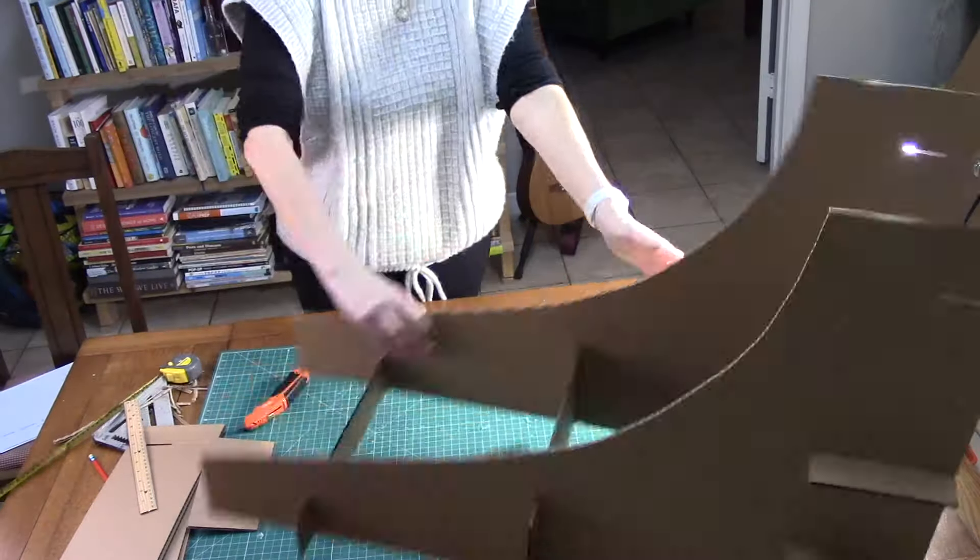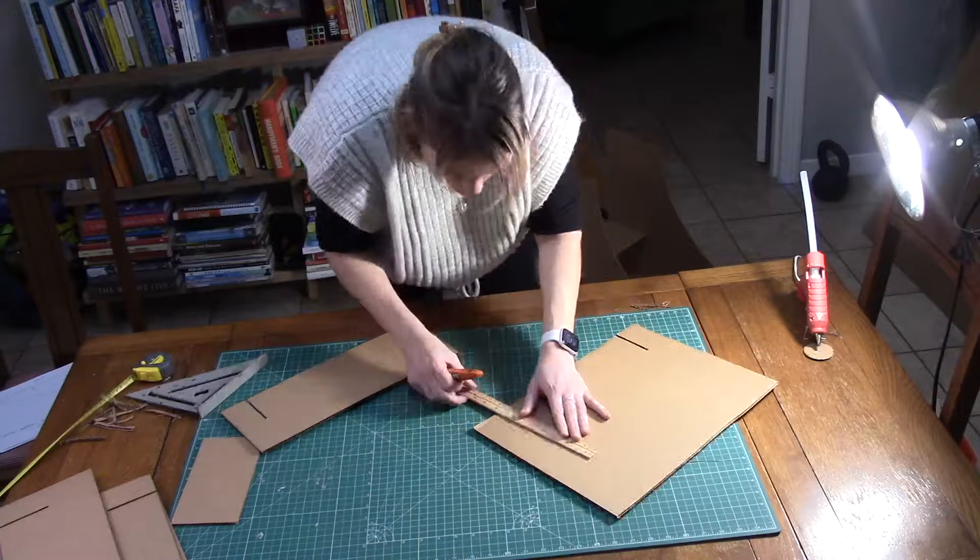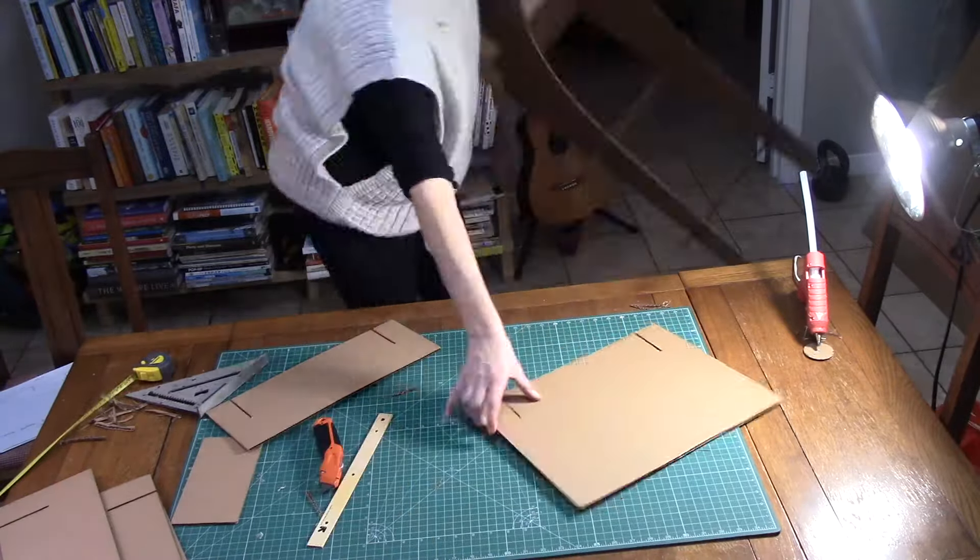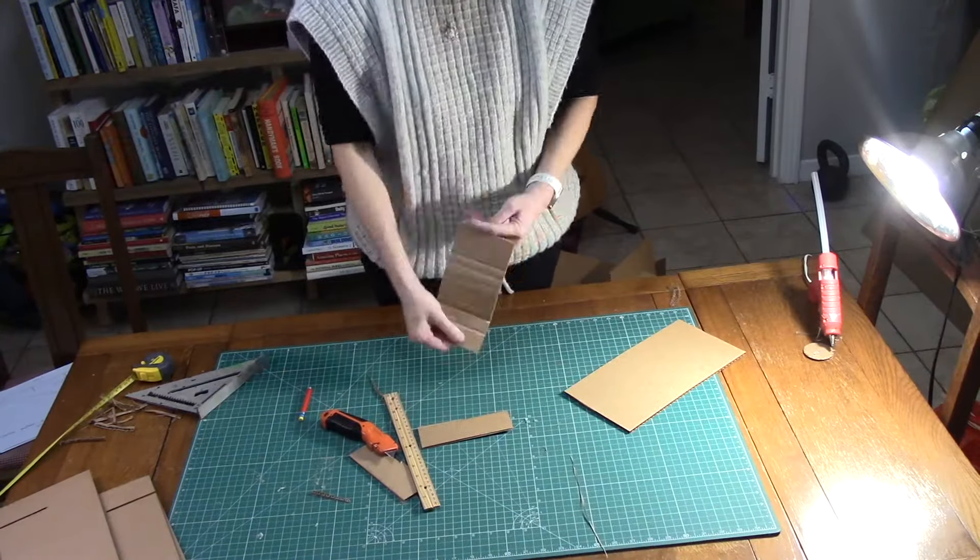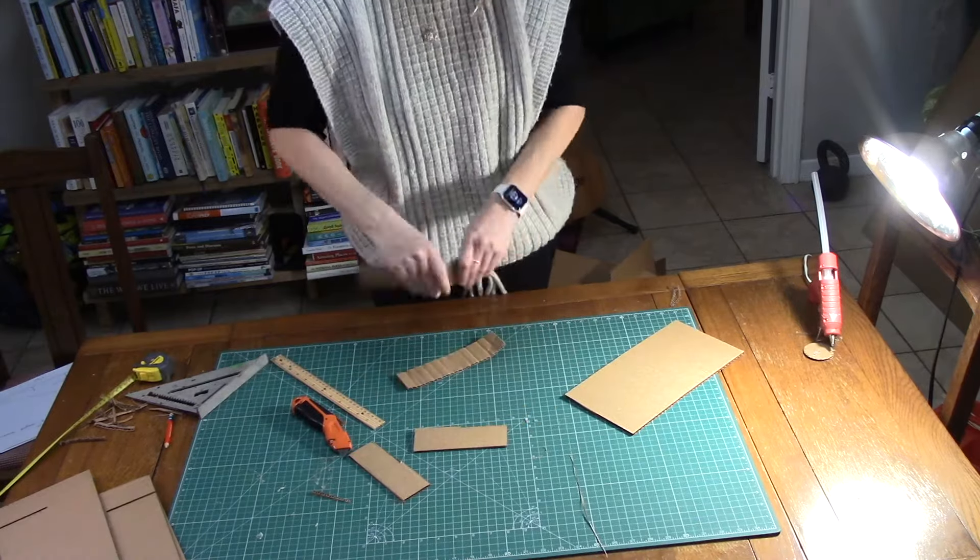Now this is going to be the platform that the car is going to sit on, so it's actually a little bit wider than the other crossbar. It goes on top, and then here I'm making a couple of hinges—cardboard hinges—so I can stabilize the